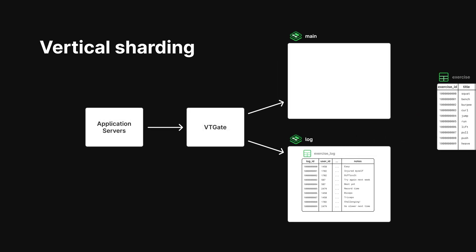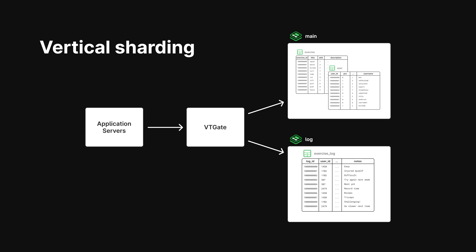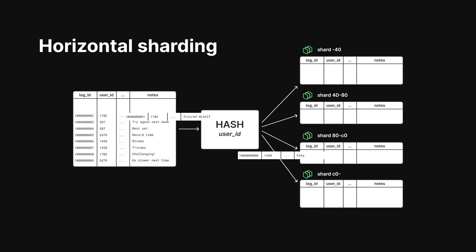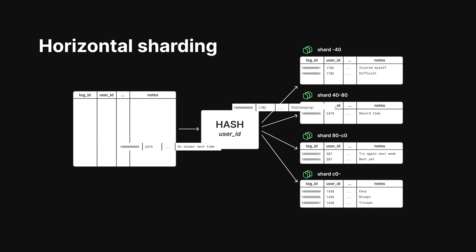Vitess also has capabilities for both vertical and horizontal sharding. It allows you to move tables between different keyspaces — logical databases in Vitess — and supports horizontal sharding with configurable sharding keys and routing rules for your database cluster. A Vitess-powered database via PlanetScale can help you solve all the scaling challenges you face on your way from an early-stage company to a huge success with millions of users.